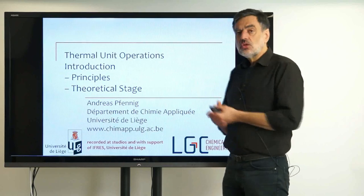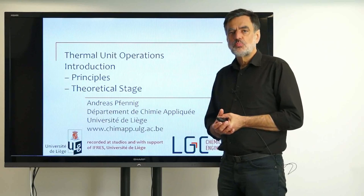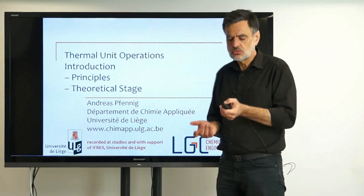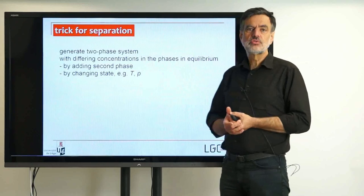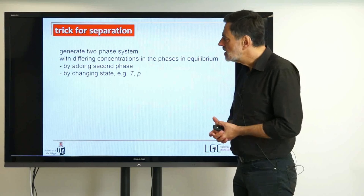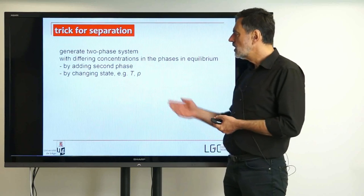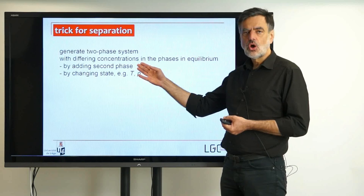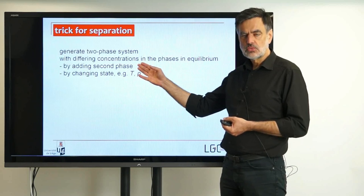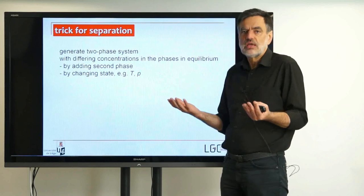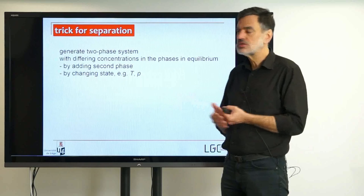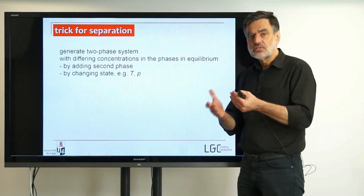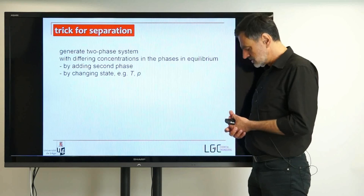How can we obtain a separation of components from a mixture in principle? The trick for the separation is this: we generate a two-phase system, where in equilibrium, usually the compositions of the two coexisting phases differ in the general case — except, of course, if you have an azeotrope or some other conditions where some concentrations are identical. But the general case is that the concentrations differ.